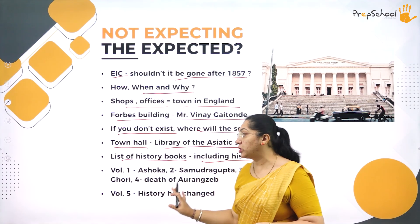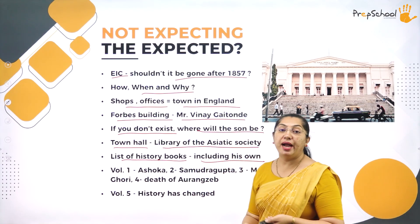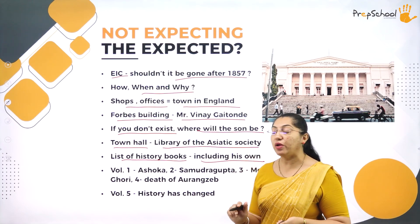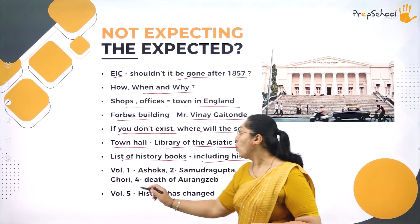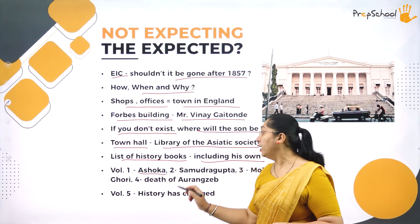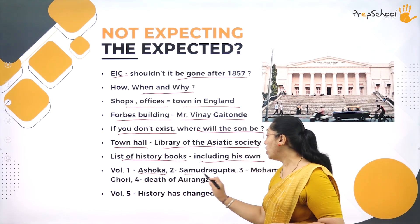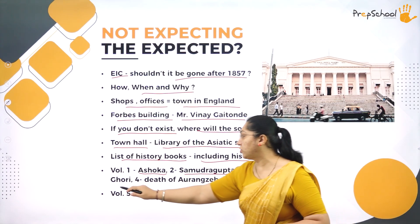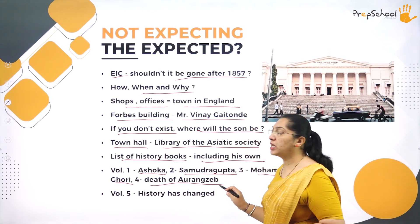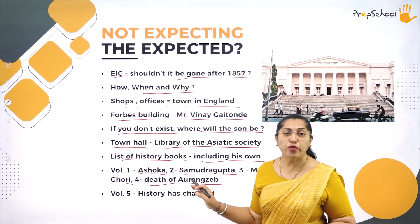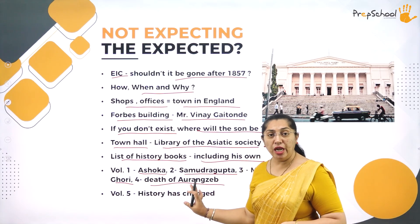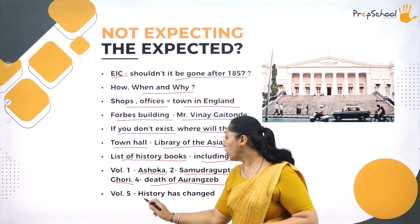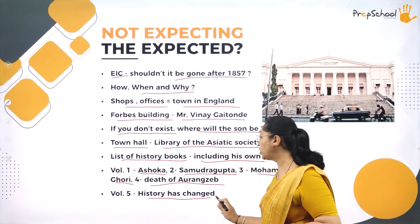A collection of history books is given — it was five volumes. Volume one was Ashoka, volume two was Samudragupta, volume three was Mohammed Gori, and volume four was the Death of Aurangzeb. Till now, everything was fine. But in the fifth volume, history had changed.